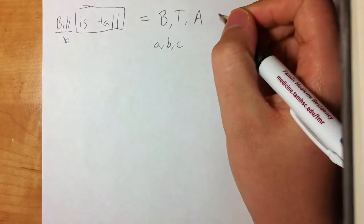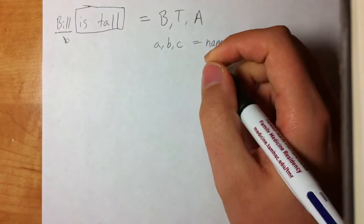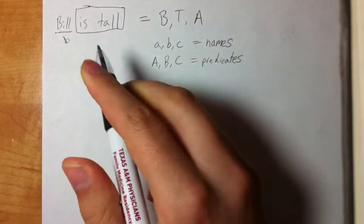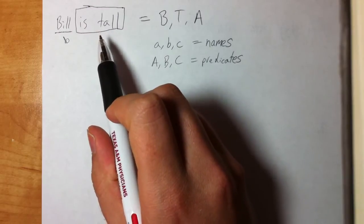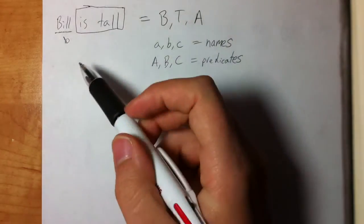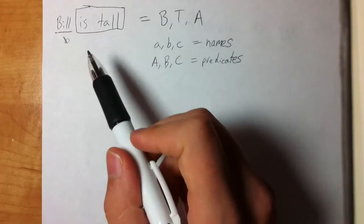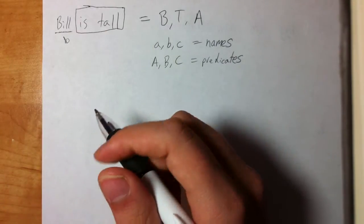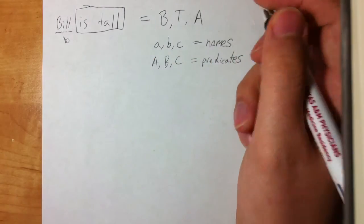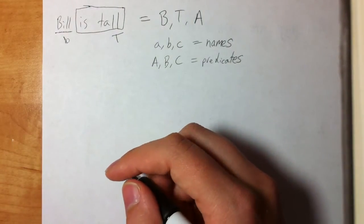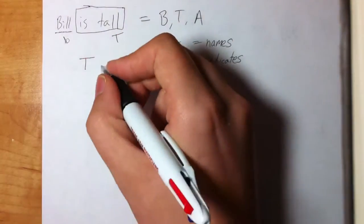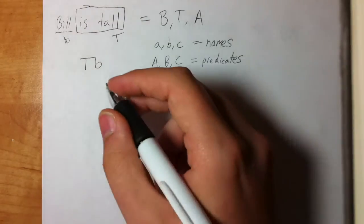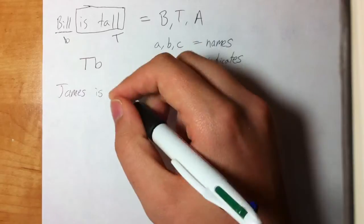For capital letters, we use predicates. A predicate is something that defines or explains something about an individual constant — it's something that you can be. You can be tall, you can be small, you can be a runner, you can be a dog or a cat. We symbolize predicates with a capital letter. In this case we'll choose capital T. The predicate comes first, so 'Bill is tall' is written as capital T, lowercase b — that's all there is to it.